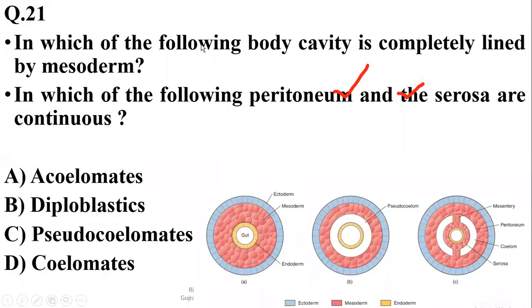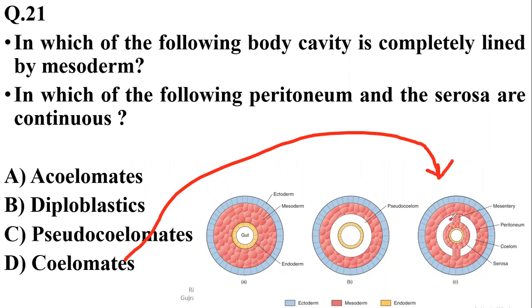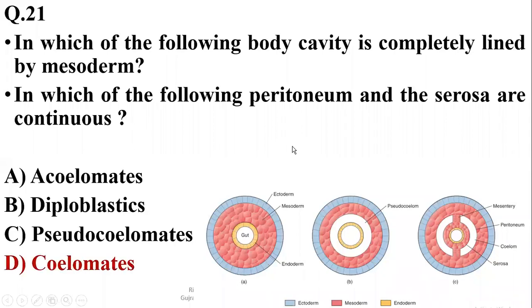In which of the following body cavity is completely lined by mesoderm? In which of the following peritoneum and the serosa are continuous? There is coelomates, a group of coelomates in which body cavity is completely lined by mesoderm. Acoelomates do not have a specific body cavity. In case of pseudocoelomates the cavity is having inner lining of endoderm and outer lining of mesoderm. But only in case of coelomates the body cavity is completely lined by mesoderm on all sides. That's why they are known as true coelomates or coelomates.